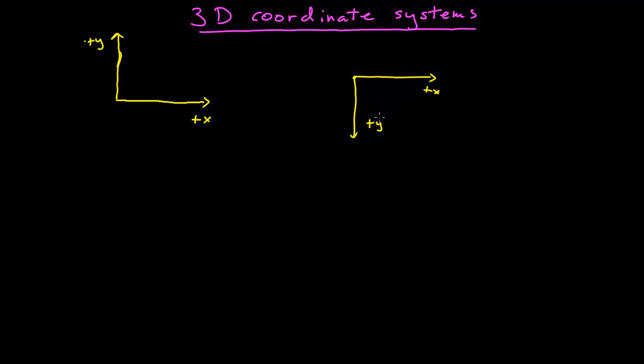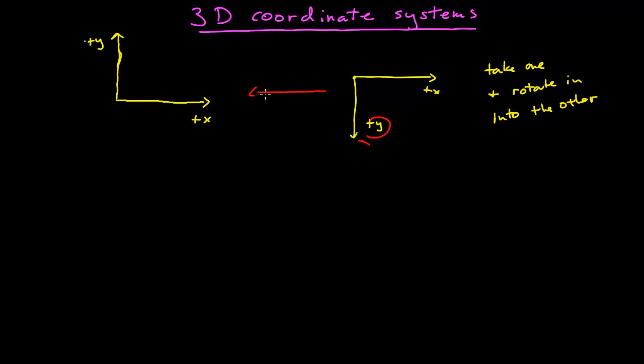And, in fact, you can tell that they're equivalent if you can take one and rotate it into the other. So, for example, if I were to take this, sort of grab onto the y-axis, flip it out of the screen, and rotate it around the x-axis 180 degrees, I would get a coordinate system that looks exactly like that one.